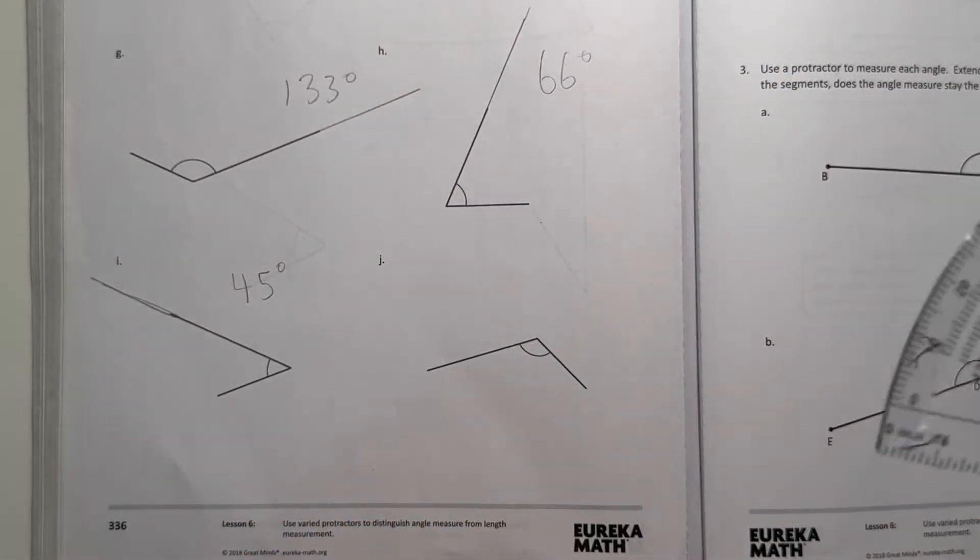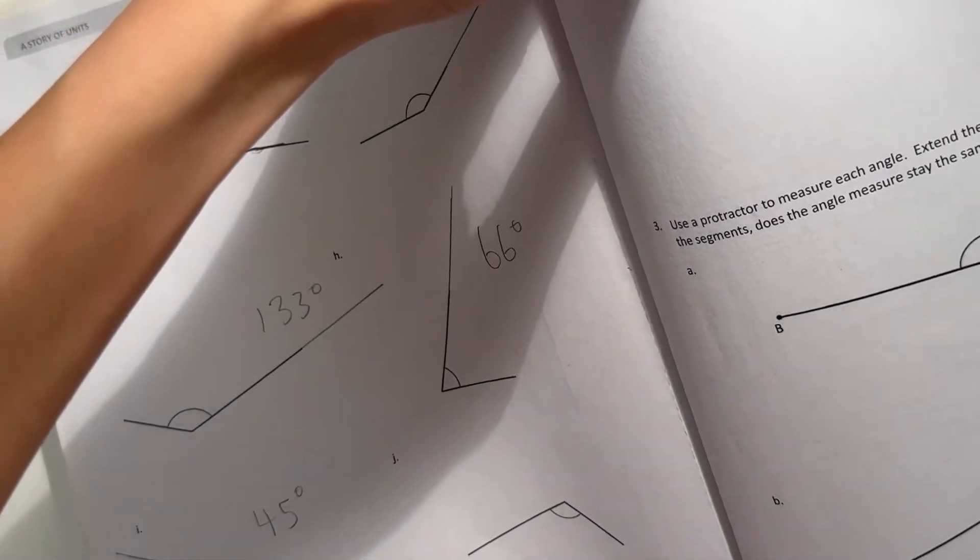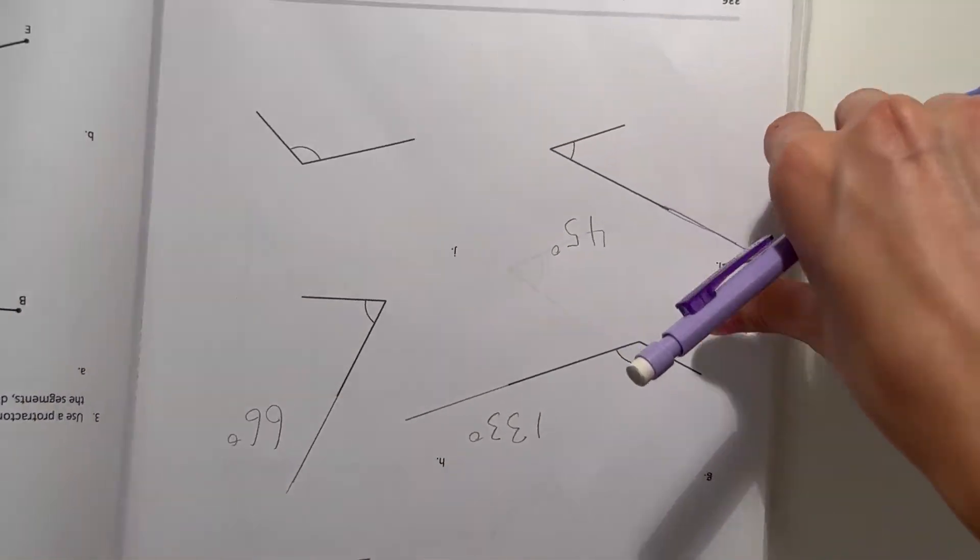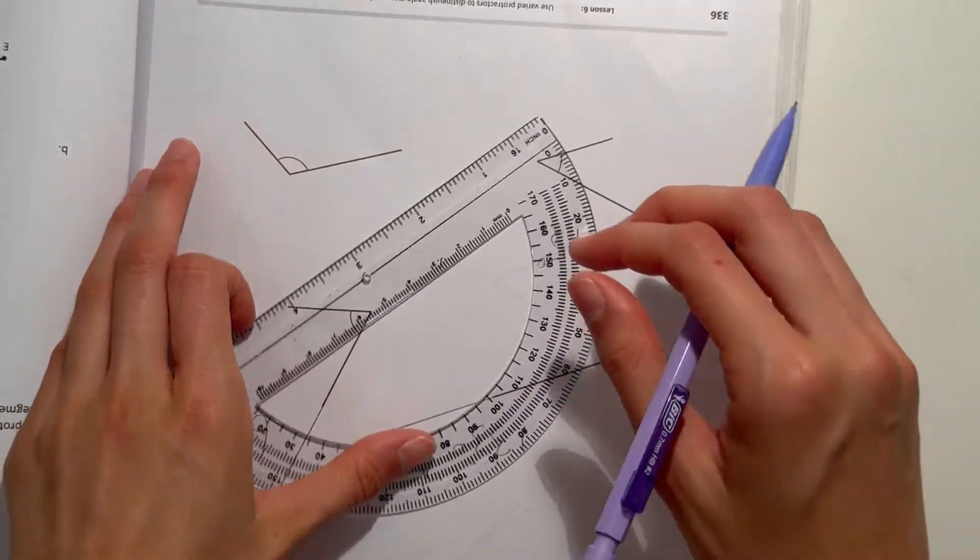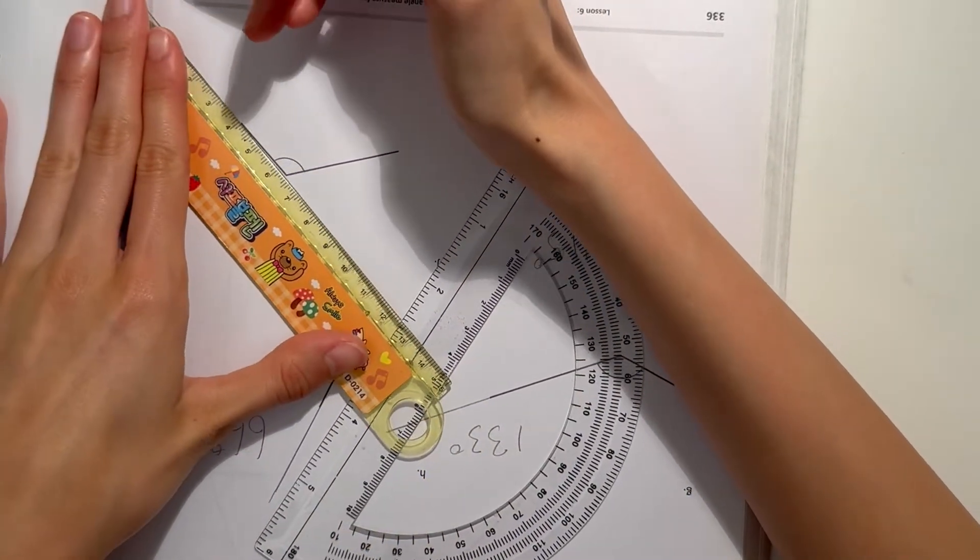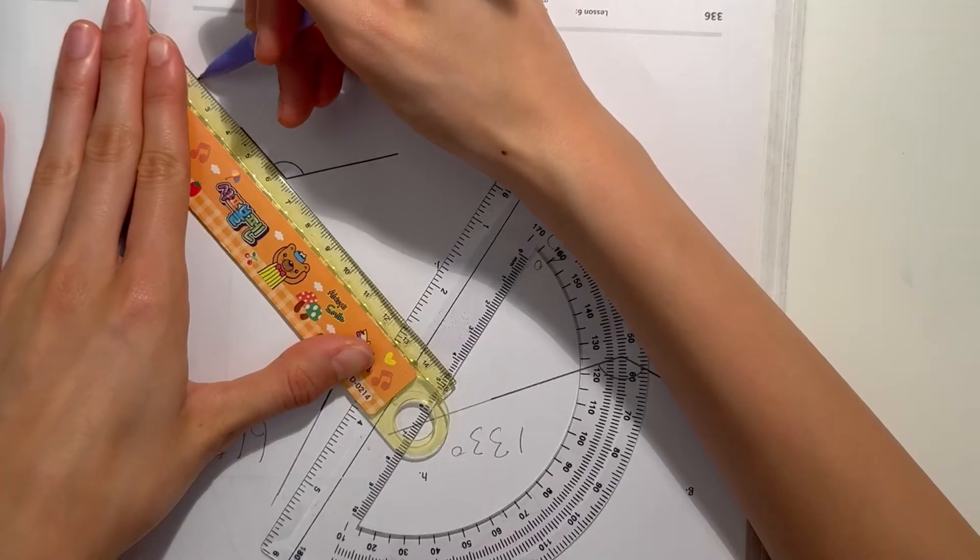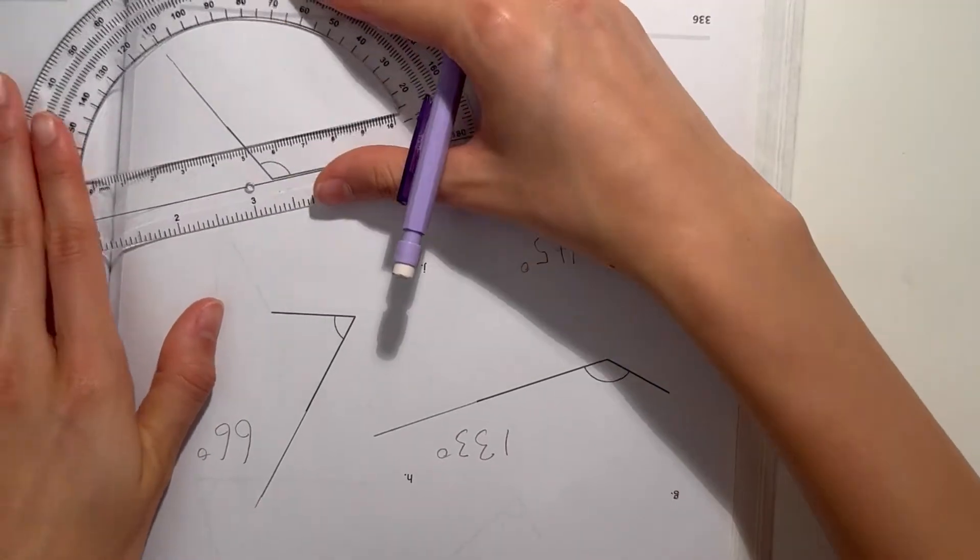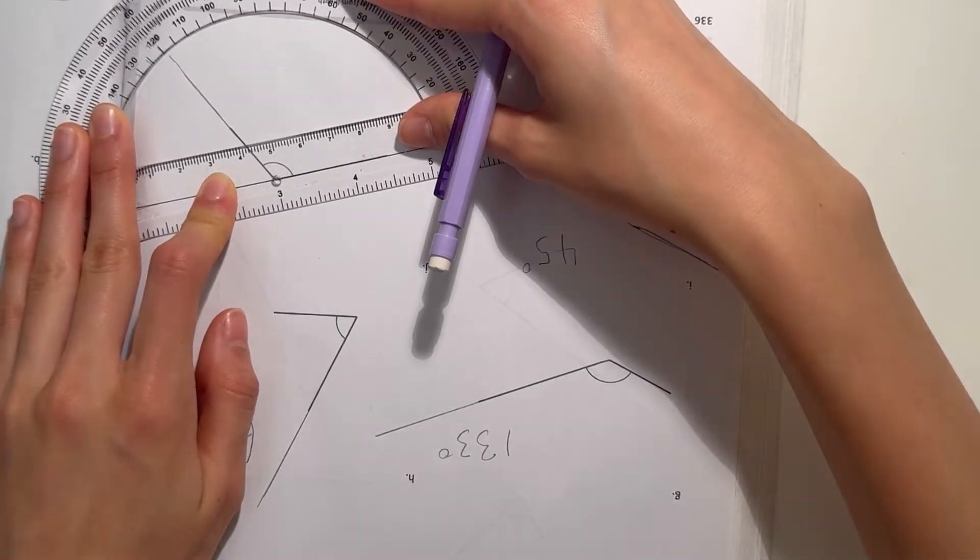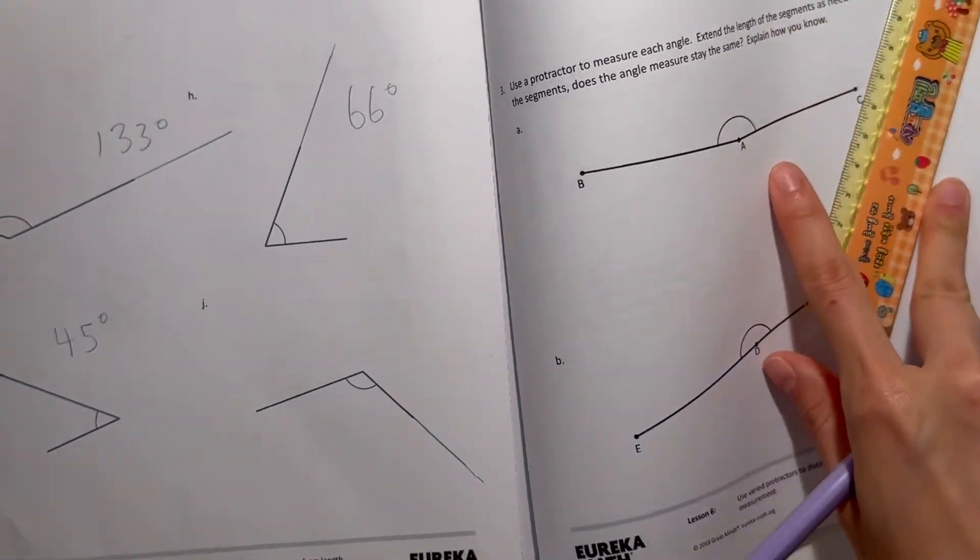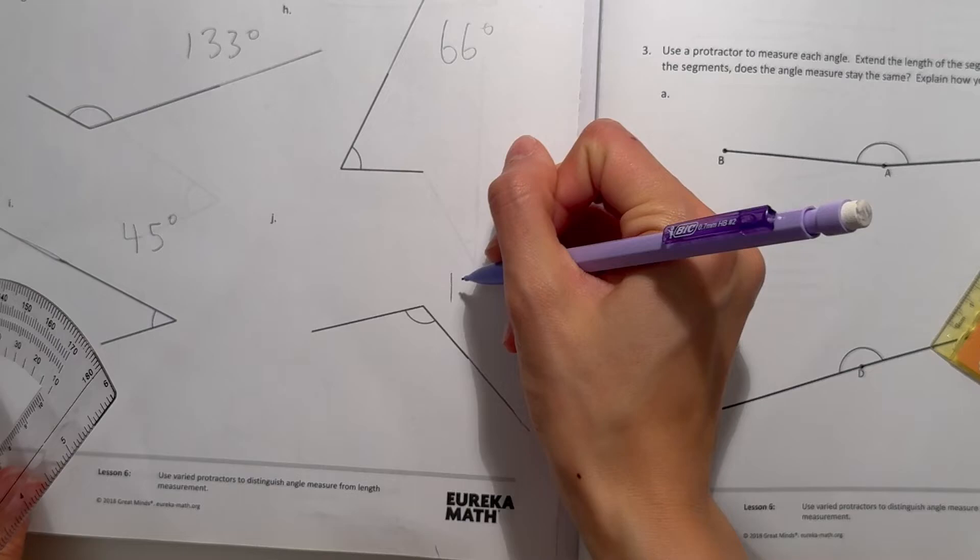And now for J. Let's turn the page again. I think it's easier to measure it like this. Let's extend the leg of the angle and match everything up. This should be 120 degrees. Flip it back around. 120 degrees.